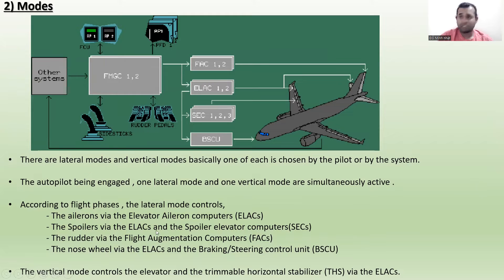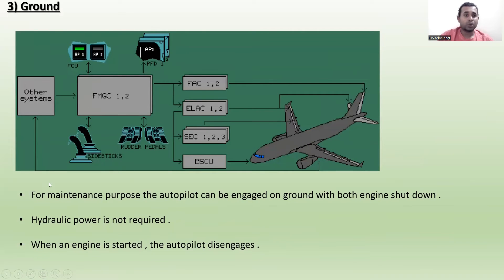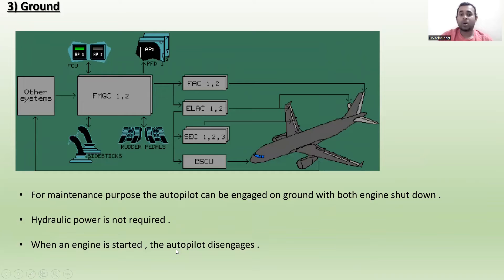The vertical mode controls the elevator. For maintenance purposes, the autopilot can be engaged on the ground with both engines shut down. Hydraulic power is not required. When an engine is started, the autopilot disengages.